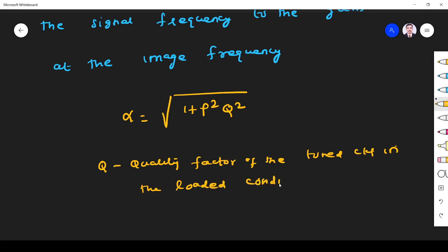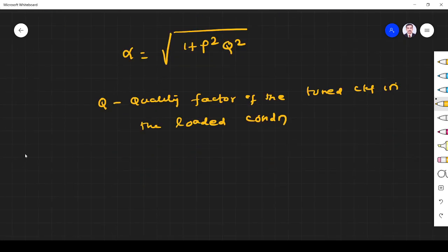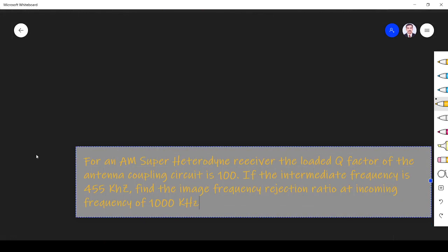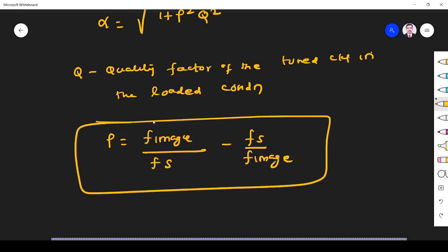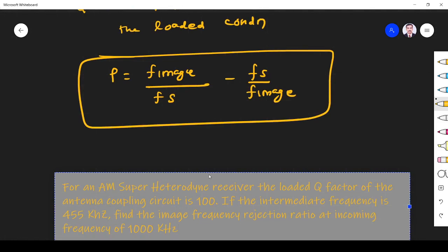What is rho? Rho is given by f_image divided by f_signal minus f_signal by f_image. f_s is the signal frequency, f_image is the image frequency.